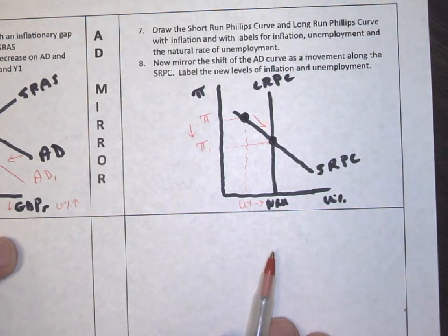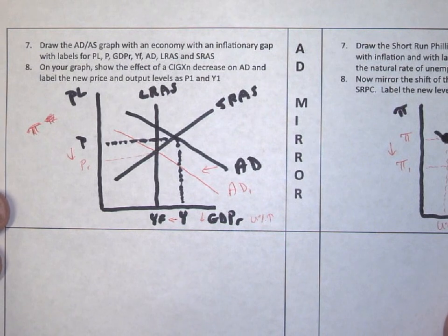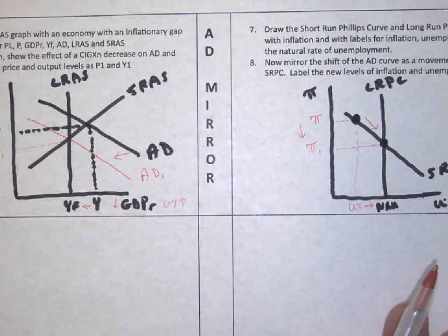Okay. There's numbers seven and eight on aggregate demand and on the Phillips curve. All right.